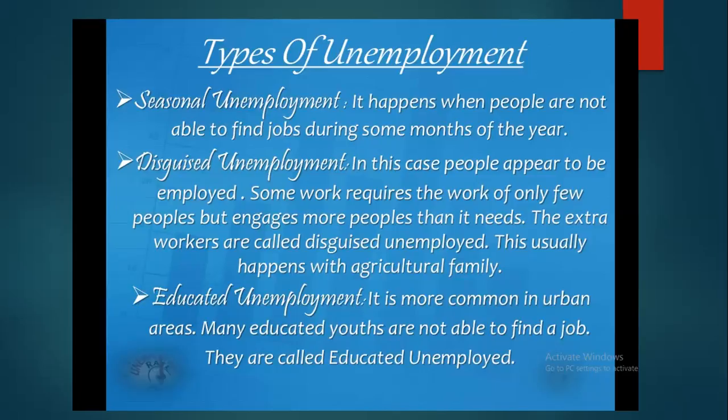Those extra workers could go for some other job and help the economic stability of their family. But sometimes, as they are part of the family or interested only in agriculture, they will take part there and not go outside for any other work. So instead of 5, there are 10, but the production is the same — it does not increase. That is known as disguised unemployment.